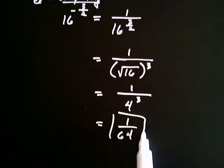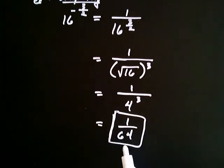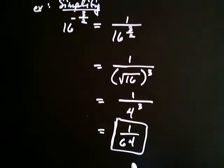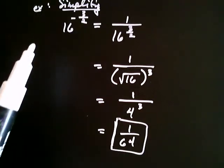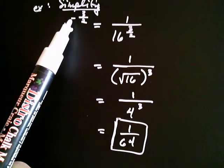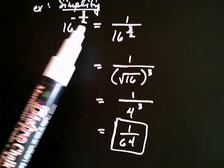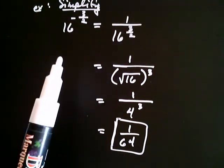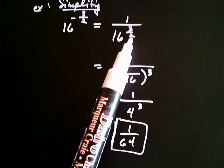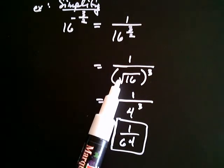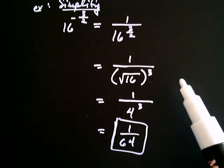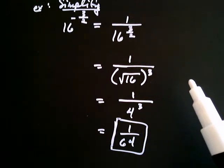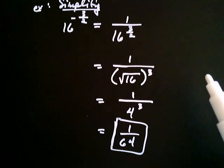Remember: whenever you're dealing with an exponential expression and you have an exponent that's a negative fraction, there are really three things to take care of. The negative means you write it as 1 over that expression so the exponent becomes positive. Then the denominator corresponds to taking a root, and the numerator corresponds to taking a power. That's how you handle rational exponents. In the next video, we'll deal with simplifying more complicated rational expressions involving rational exponents.